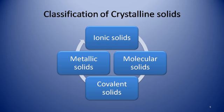Covalent solids are crystalline solids in which constituent particles are non-metals linked to adjacent atoms by covalent bonds throughout the crystal. They are strong and directional in nature, very hard and brittle, and have extremely high melting and boiling points. They may even decompose before melting. They are insulators and do not conduct electricity.